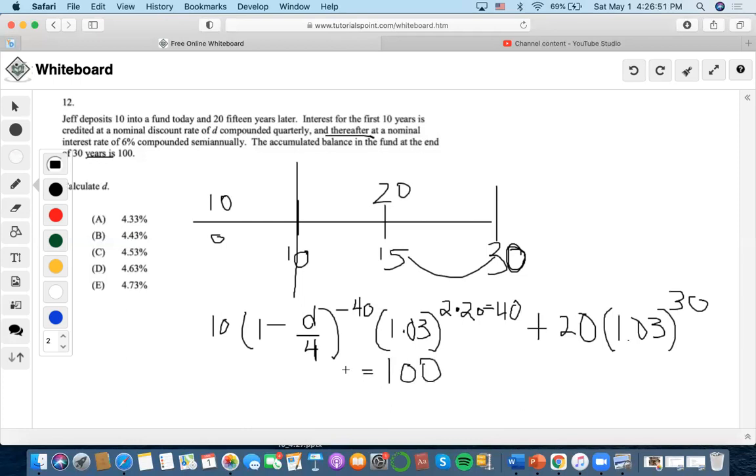Now we want to solve for D. Let's simplify. We know that 1.03 to the 40th power is 3.26237 times 10, which is 32.6204.